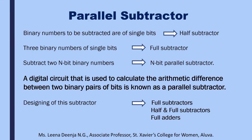The combinational circuits which are used to subtract two binary numbers are called subtractors. When the binary numbers to be subtracted are of single bits, then we can use a half subtractor for getting the result. If we need to subtract three binary numbers of single bits, among which two will be inputs while the other will be the borrow, we can use a full subtractor.